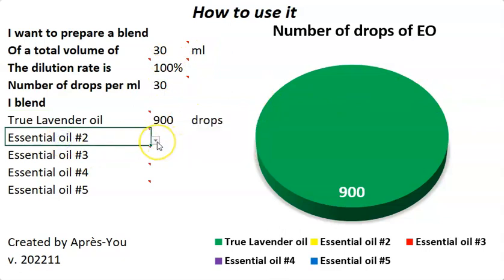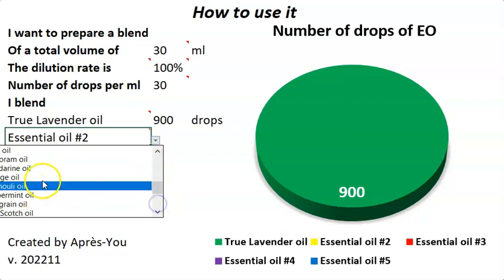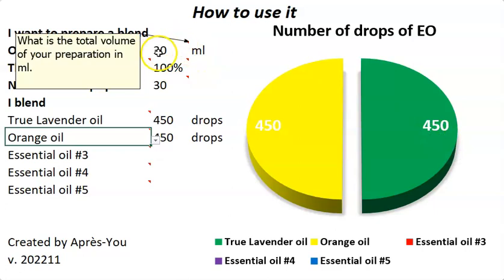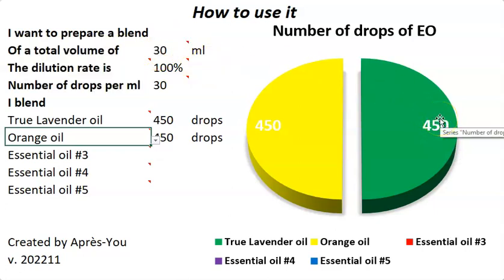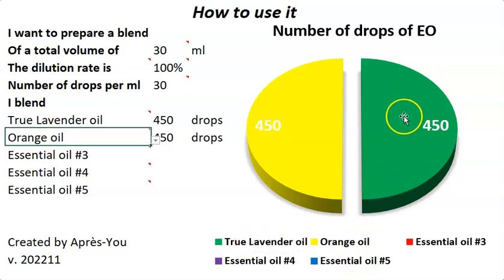If I want to add another oil, let's say orange, then you will see that for a 30 milliliter bottle you will have to add 450 drops of orange and 450 drops of true lavender. It makes sense because these two oils have the same blending factors, meaning that when you speak about the perfume of the oil, they are equally as strong together.